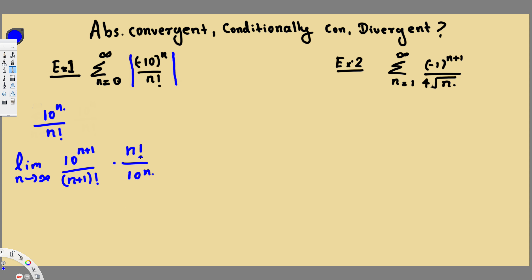When you divide, it flips around and goes to the top. To satisfy absolute convergence, we have to get a value less than one — if it's less than one it's absolutely convergent, if it's equal to one there's no conclusion, and if it's greater than one it is divergent. So let's go ahead and see whether it's absolutely convergent.